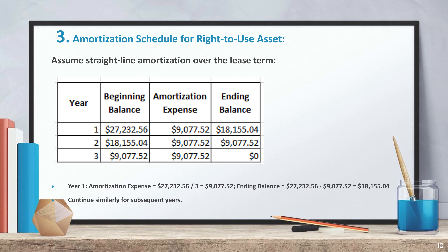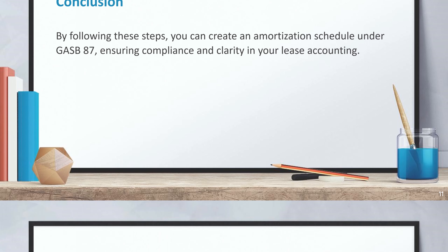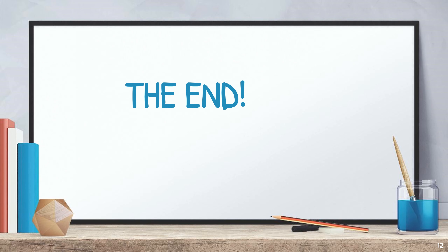The ending balance equals $27,232.56 minus $9,077.52, which equals $18,155.04. Continue similarly for subsequent years. By following these steps, you can create an amortization schedule under GASB 87, ensuring compliance and clarity in your lease accounting. Stay tuned for more accounting tips and tutorials, and don't forget to like and subscribe for more content.